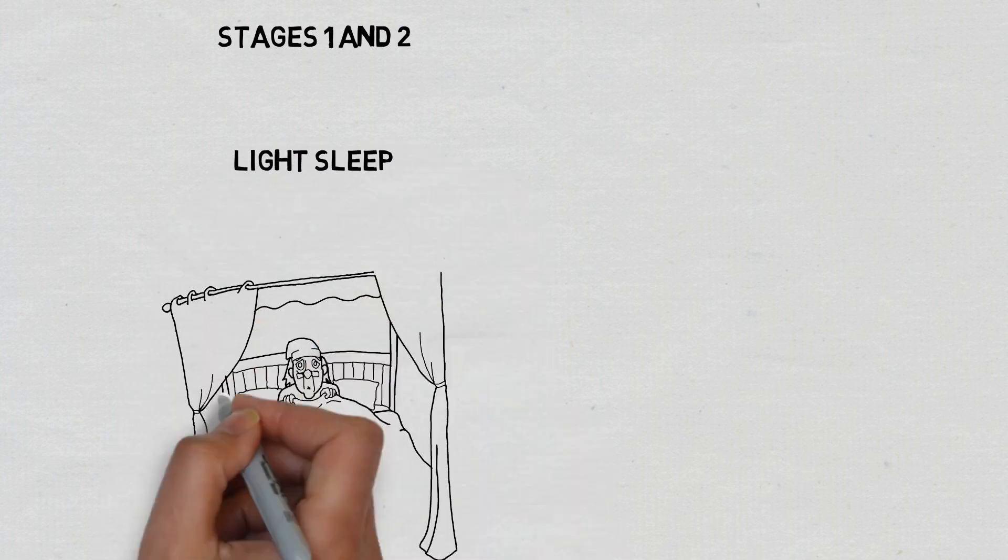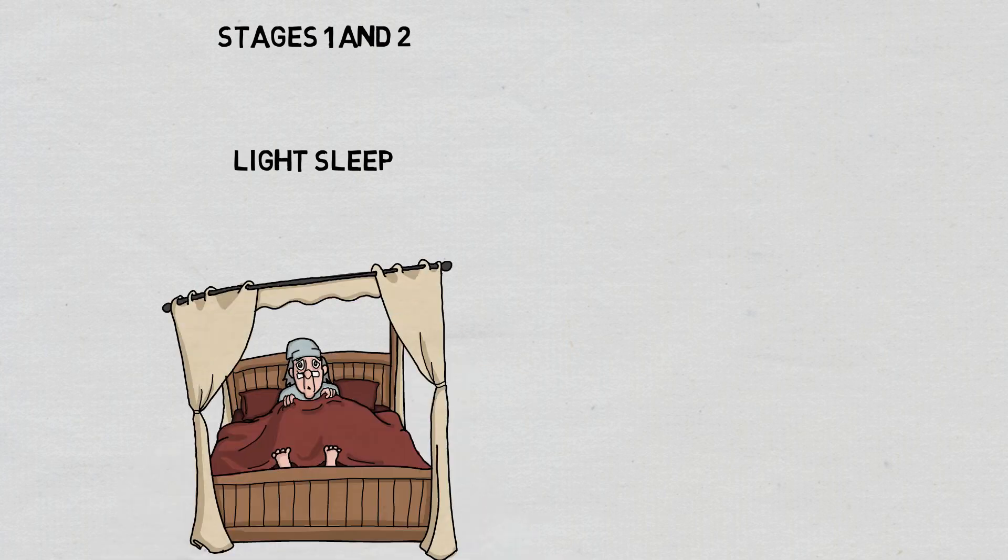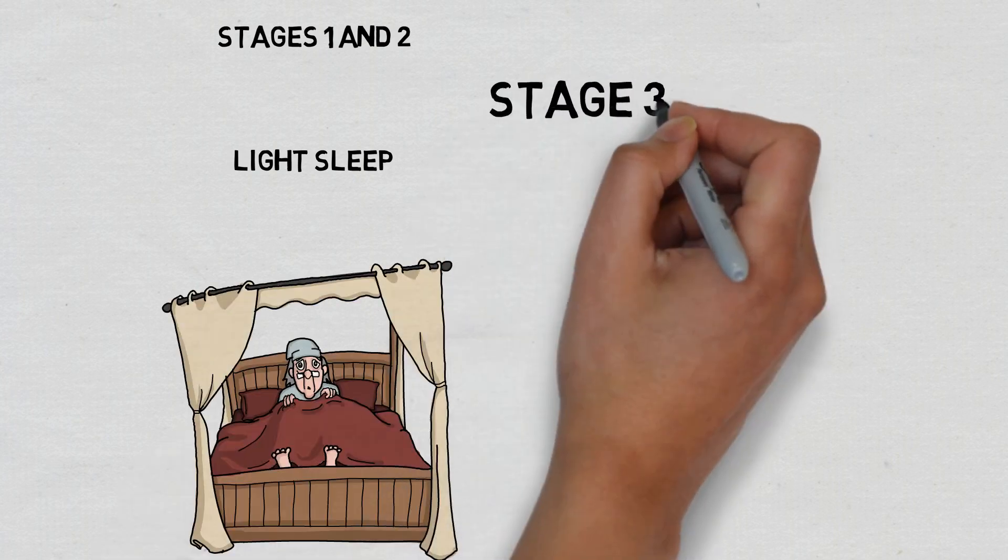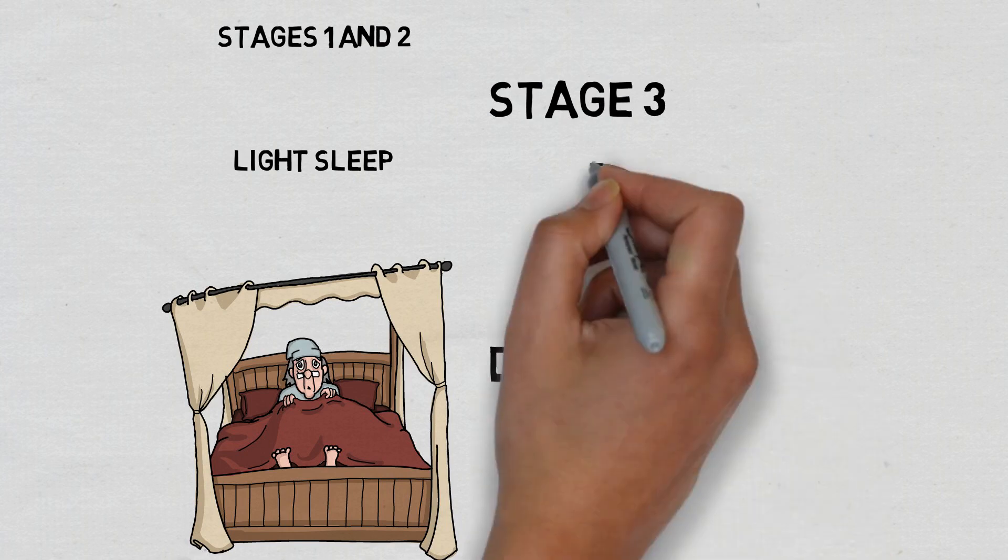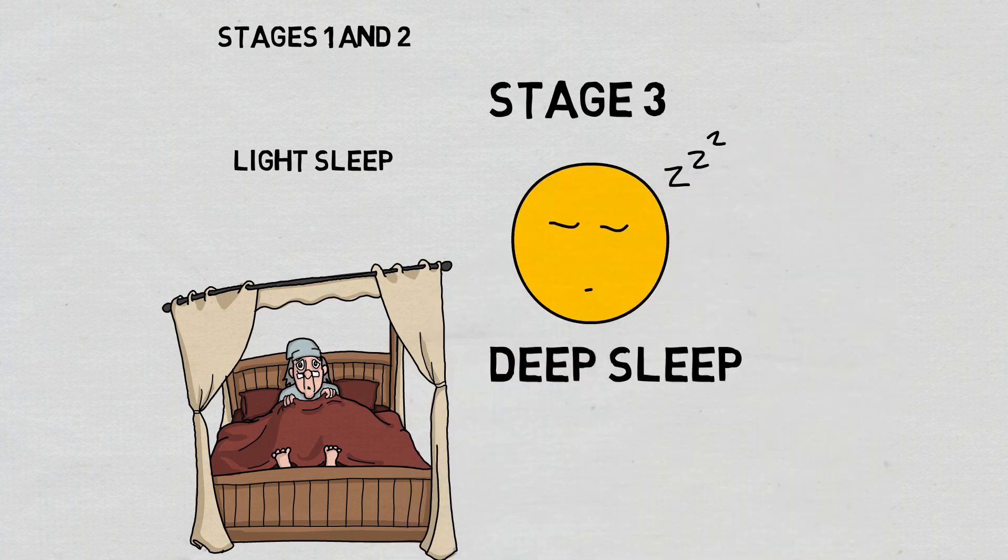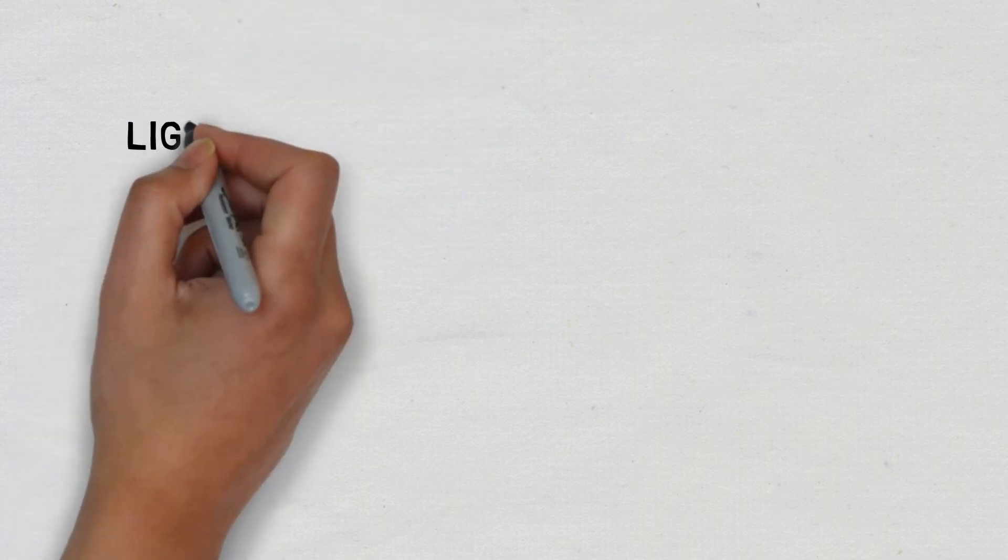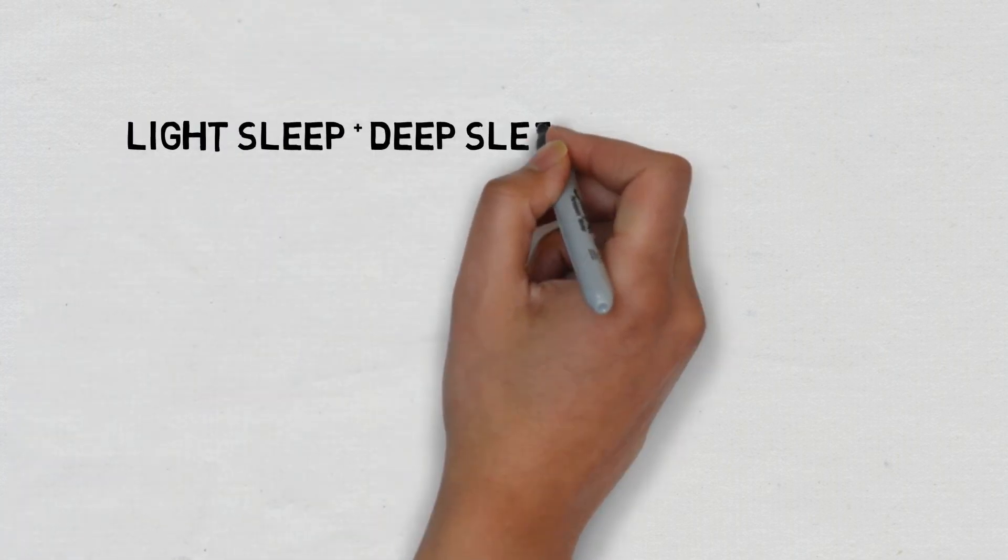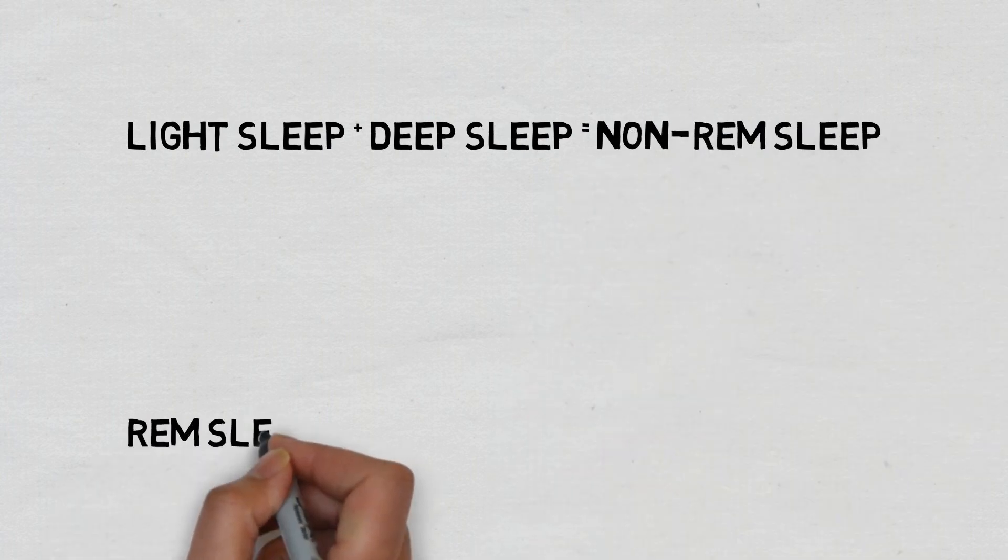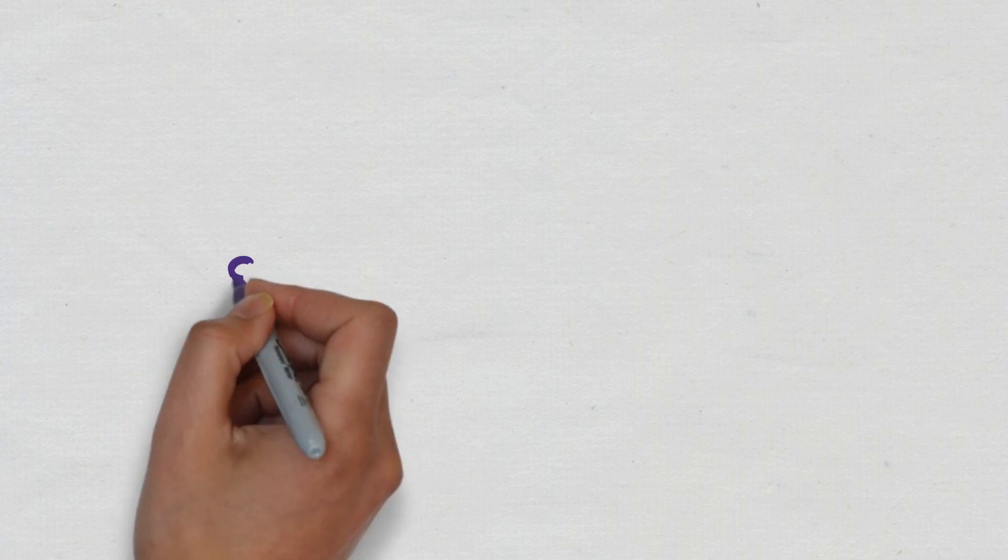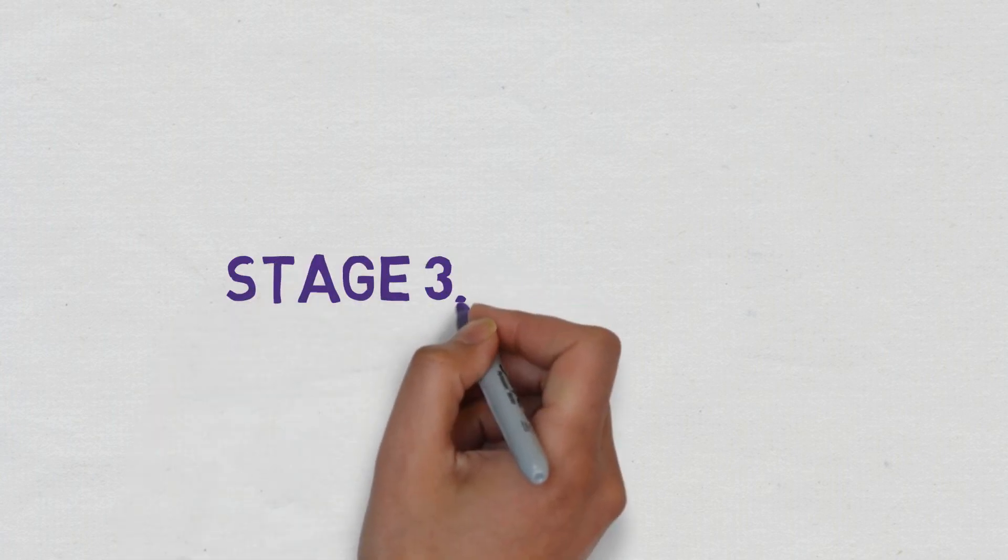And of the non REM sleep, stages one and two are known as light sleep, and stage three is known as deep sleep. So again, the sleep cycle can thus be put into three categories: light sleep, consisting of stages one and two, deep sleep, consisting of stage three, and REM sleep, also known as stage four. And of this, we know that light and deep sleep both make up non REM sleep.